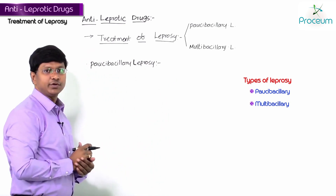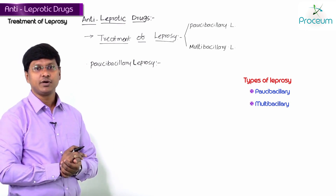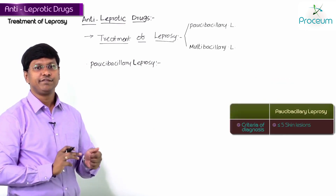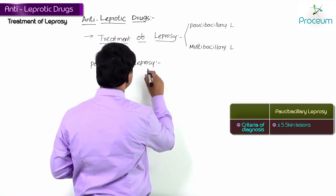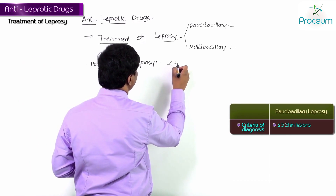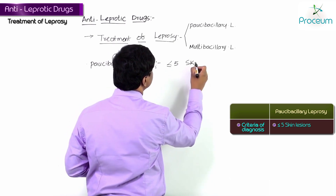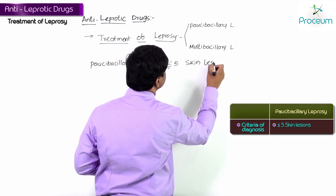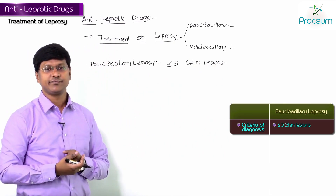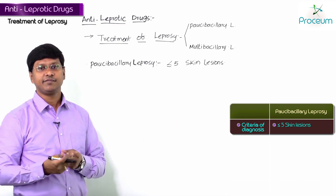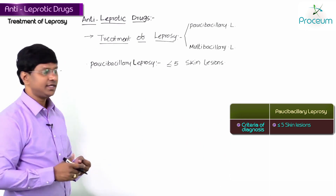If you take the treatment of paucibacillary leprosy, remember it is a form of leprosy in which five or less than five skin lesions are present. So paucibacillary leprosy is a form of leprosy in which five or fewer skin lesions are present.